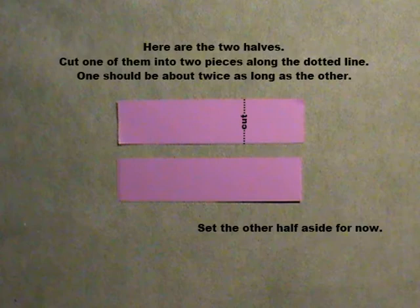Here are the two halves. Cut one of them into two pieces along the dotted line. One should be about twice as long as the other. Set the other half aside for now.